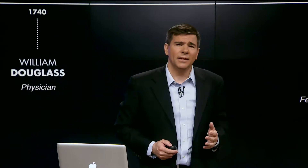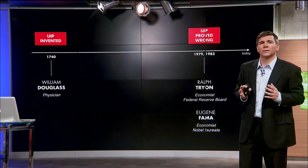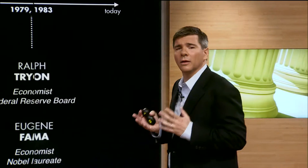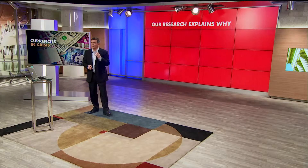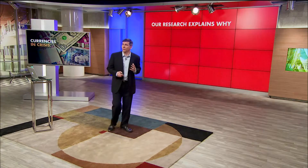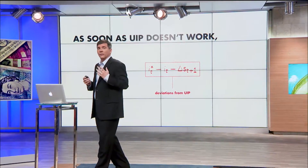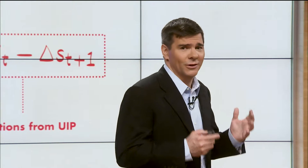But at the end of the 70s, beginning of the 80s, economists began noticing that UIP doesn't work. And for the last 30 years, we've been wondering why — why the change in exchange rate is not equal to the interest rate difference. Our research explains why. It's a difficult question, but it helps to think in terms of currency returns. Because as soon as UIP doesn't work, there are potential returns. As soon as the exchange rate is not equal to the interest rate difference, there is a way to make money. And this, as you can imagine, was not lost on everybody.